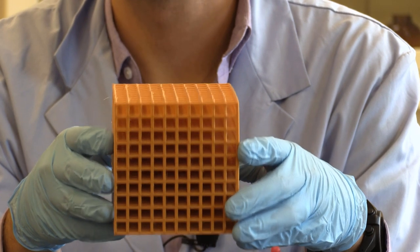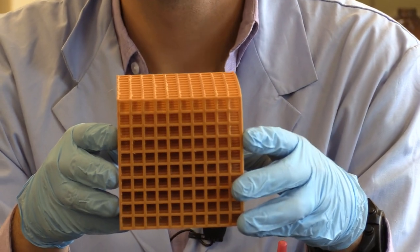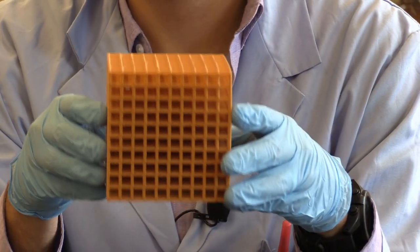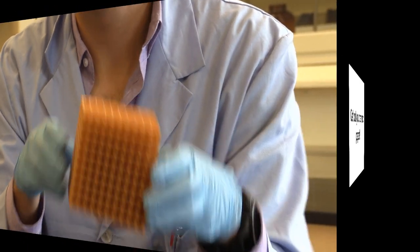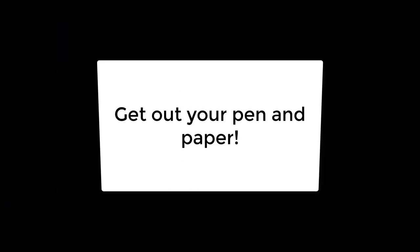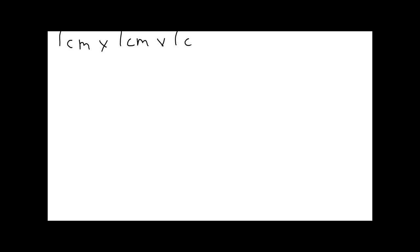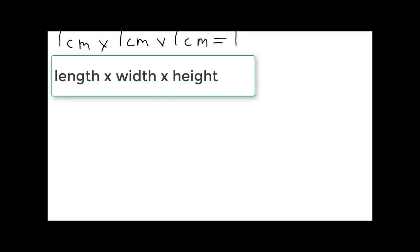Next, I will show you how it looks written out mathematically to make sure that you have your units canceling out if you're trying to do the math at home. The way it works is first we set up what we know, which is that each cube is one centimeter by one centimeter by one centimeter. When we multiply each of those tiny cubes — length times width times height — we get one centimeter cubed.